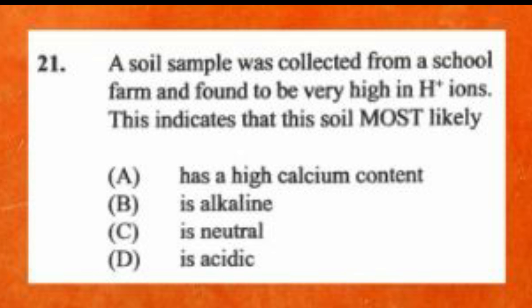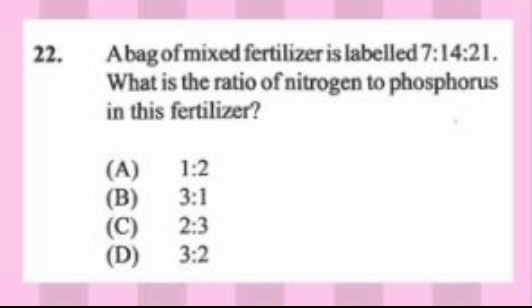Question number twenty-one: a soil sample collected from a school farm was found to be very high in potential hydrogen. This indicates the soil most likely A) has a high calcium content, B) is alkaline, C) is neutral, D) is acidic. The answer is D, is acidic.